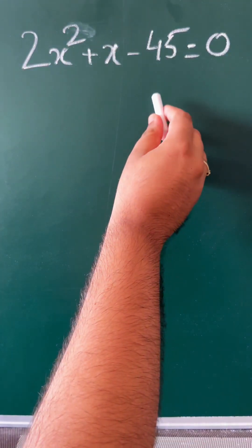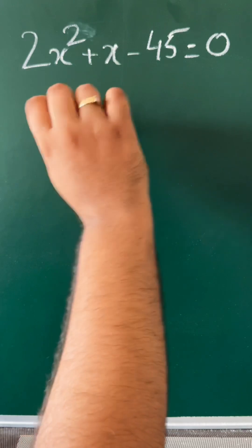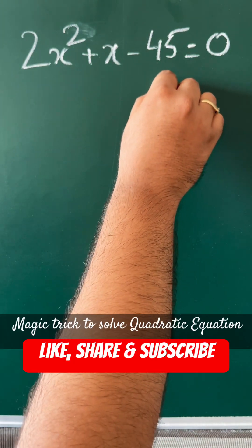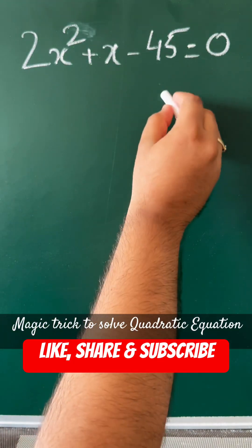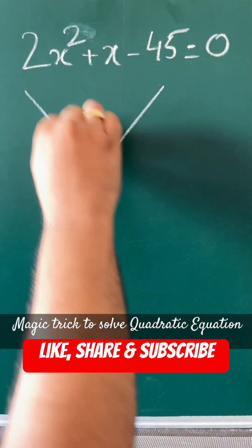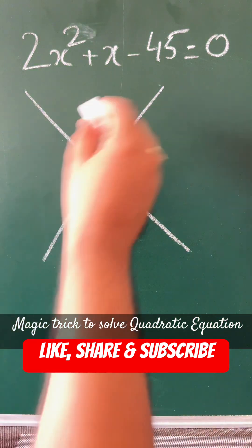Hello guys, I'll teach you a magical trick to solve any quadratic equation. So, 2x² + x - 45 = 0. Simply draw a cross and multiply.